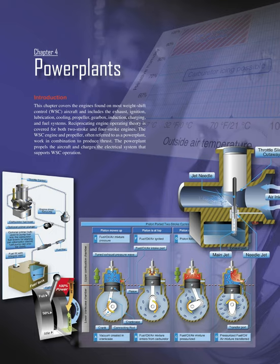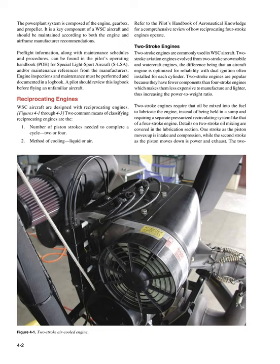Reciprocating engine operating theory is covered for both two-stroke and four-stroke engines. The WSC engine and propeller, often referred to as a power plant, work in combination to produce thrust. The power plant propels the aircraft and charges the electrical system that supports WSC operation. The power plant system is composed of the engine, gearbox, and propeller, and is a key component of a WSC aircraft that should be maintained according to both engine and airframe manufacturer recommendations.